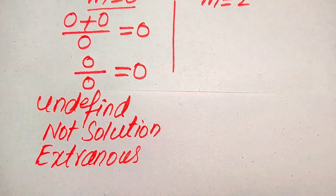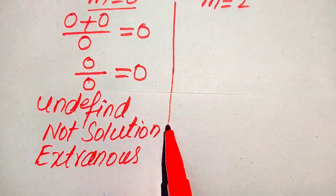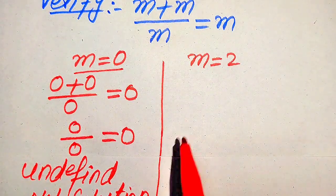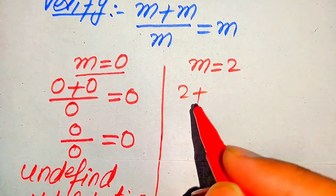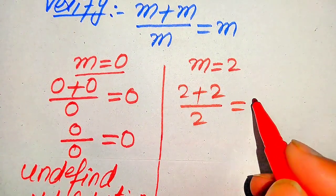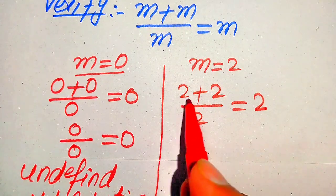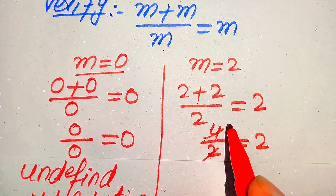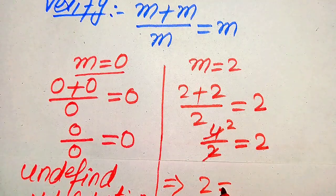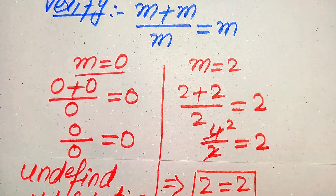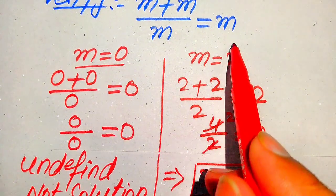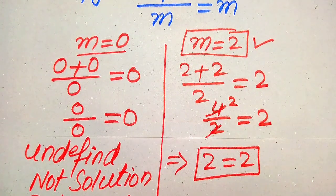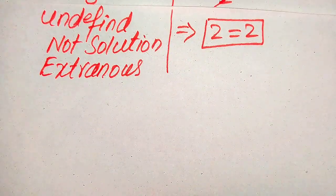Now for the second case, we put m equals 2 into the equation: 2 plus 2 divided by 2 equals 2. That gives us 4 over 2 equals 2, which simplifies to 2 equals 2. Both sides are equal, so m equals 2 satisfies the given equation. Therefore m equals 2 is the only solution of the given equation from the first method.